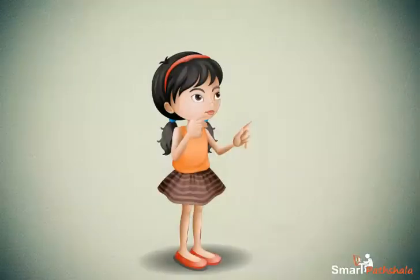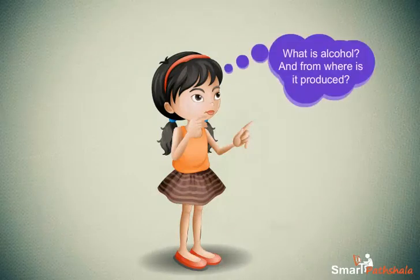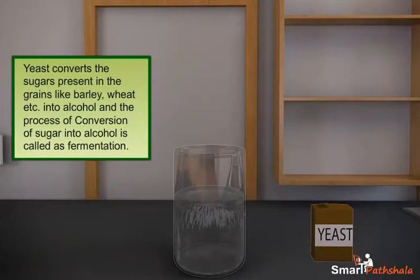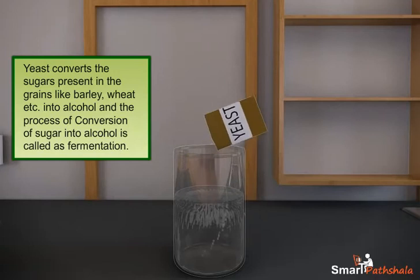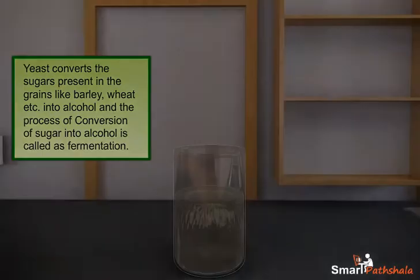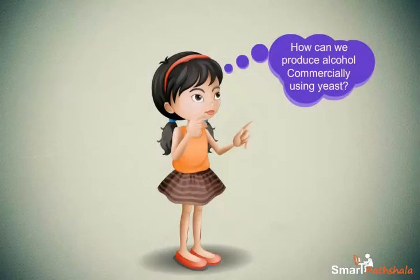Now, we all might be thinking about what is alcohol and from where is it produced. Alcohol is produced by yeast, which is a type of microorganism. Now let us learn how we can produce alcohol commercially using yeast.